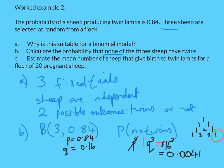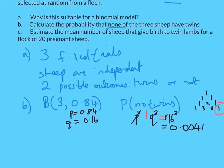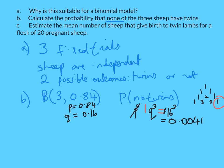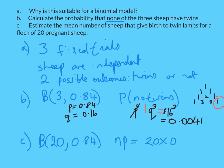For part C, I want to estimate the mean number of sheep that give birth to twin lambs for a flock of 20 pregnant sheep. Notice it's now 20, not 3. So the binomial is B(20, 0.84), and the mean is N × P = 20 × 0.84 = 16.8. So the mean number of sheep giving birth to twin lambs in a flock of 20 would be 16.8.